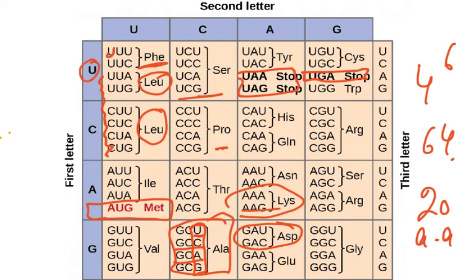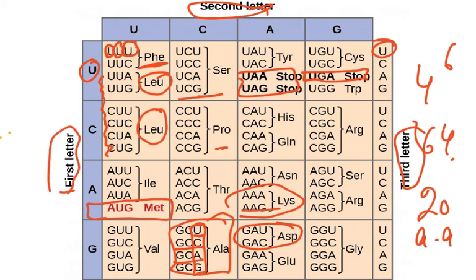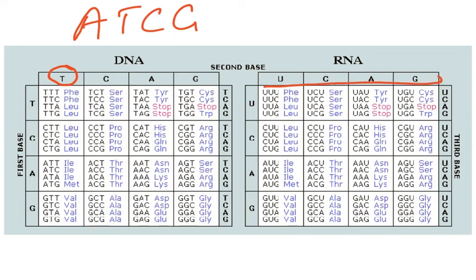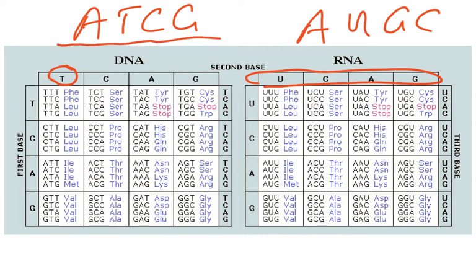Reading the codon table: the first, second, and third letters of each codon are read in sequence. DNA uses T; RNA uses U instead. In the DNA template strand you have T, A, C, G; in the corresponding mRNA you have A, U, G, C. There is a diagram showing DNA and RNA base pairings — pause and review it. The strand to be transcribed undergoes transcription to produce mRNA, then translation produces the polypeptide.